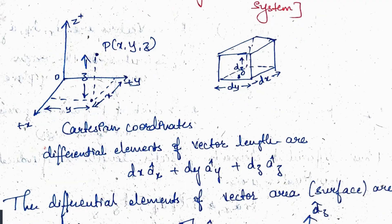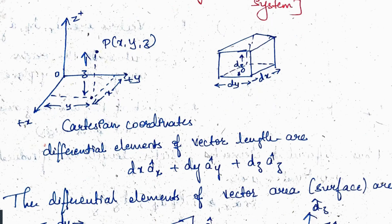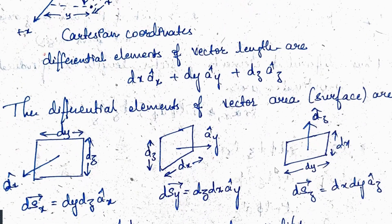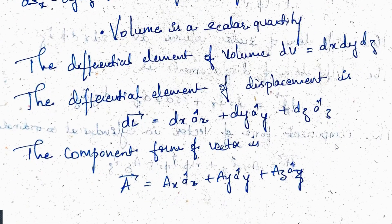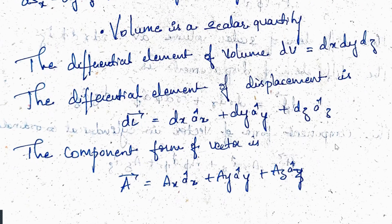For the Cartesian coordinates, the differential element of the vector length is: dl = dx·âx + dy·ây + dz·âz. For the differential surface area: dSx = dy·dz·âx, dSy = dz·dx·ây, and dSz = dx·dy·âz. Volume is a scalar quantity; the differential element of volume is dv = dx·dy·dz. The differential element of displacement dl = dx·âx + dy·ây + dz·âz.